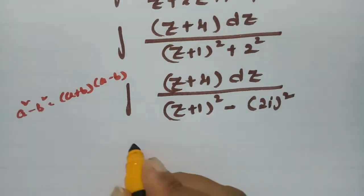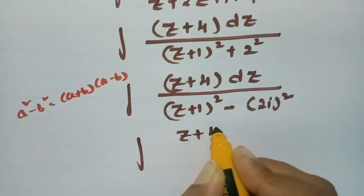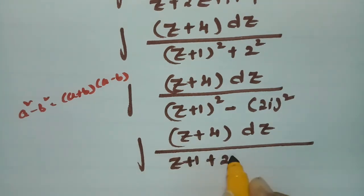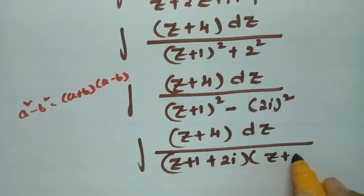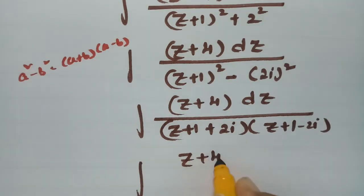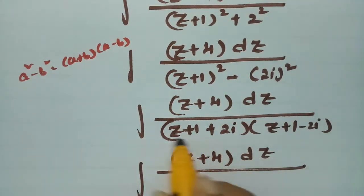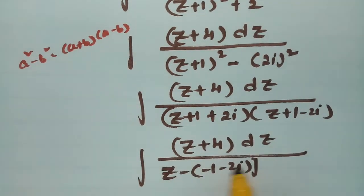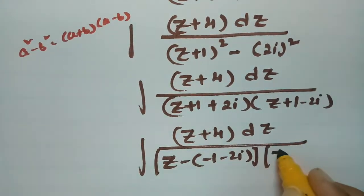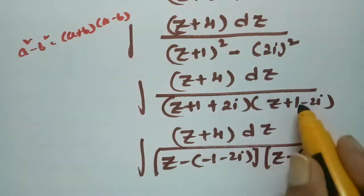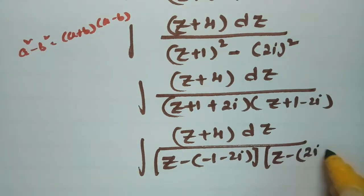I write the integral as (z+4) dz / [(z+1+2i)(z+1−2i)]. This can be rewritten as (z+4) dz divided by [−(−1−2i)] and [z−(2i−1)], putting it in the form z−a. So the two factors are (z+1+2i) and (z−(−1+2i)).